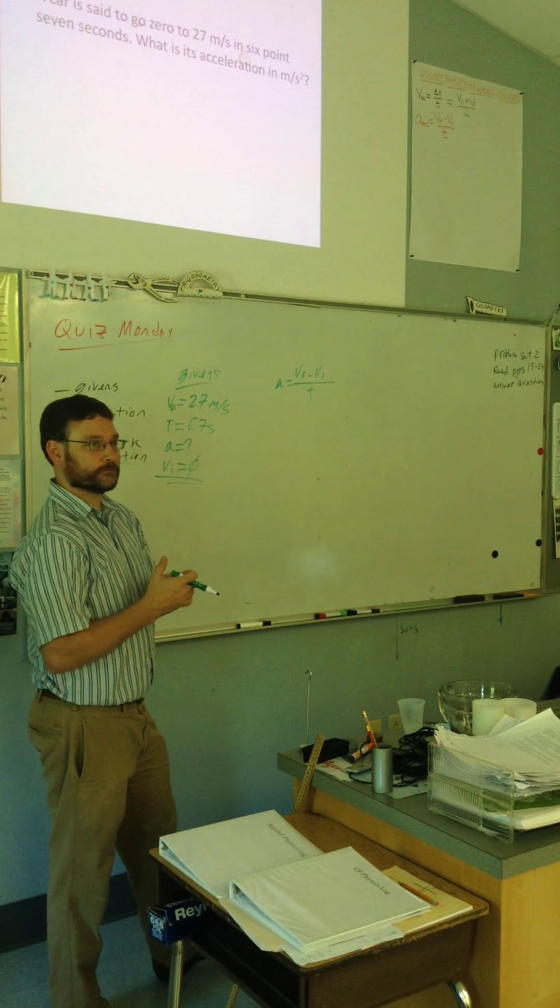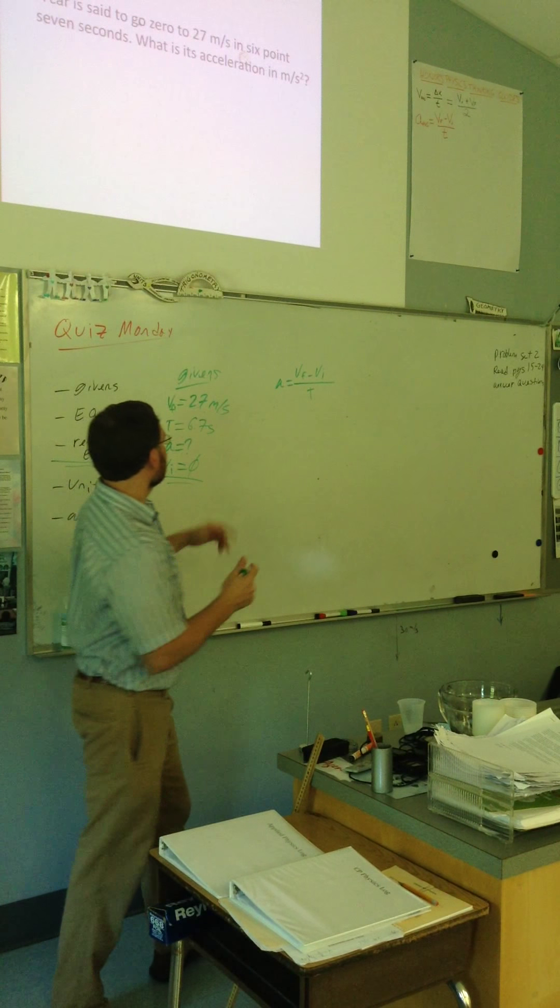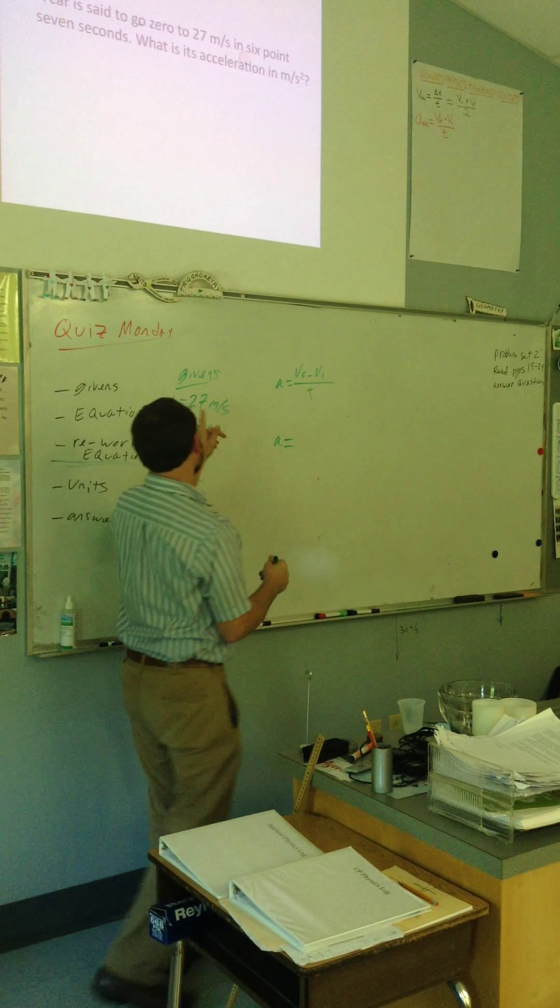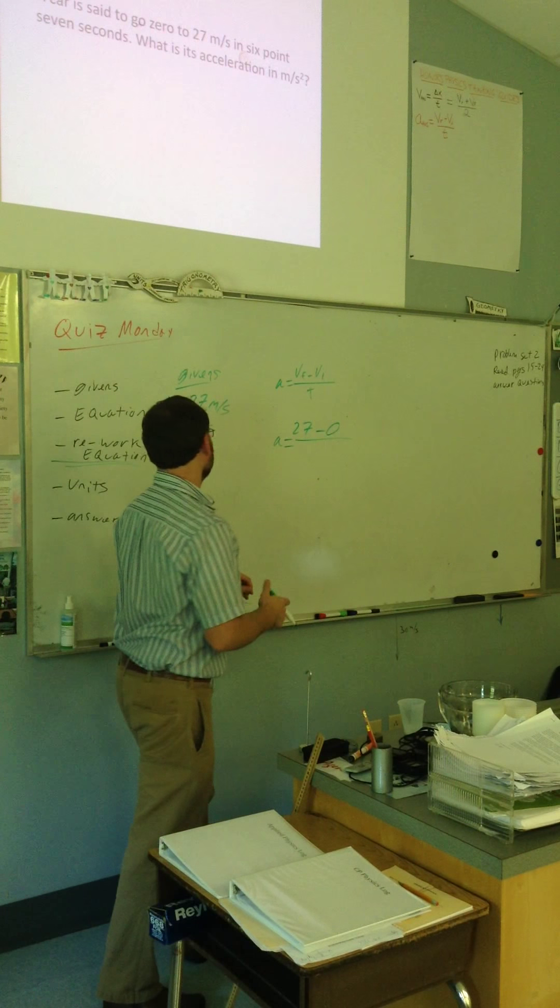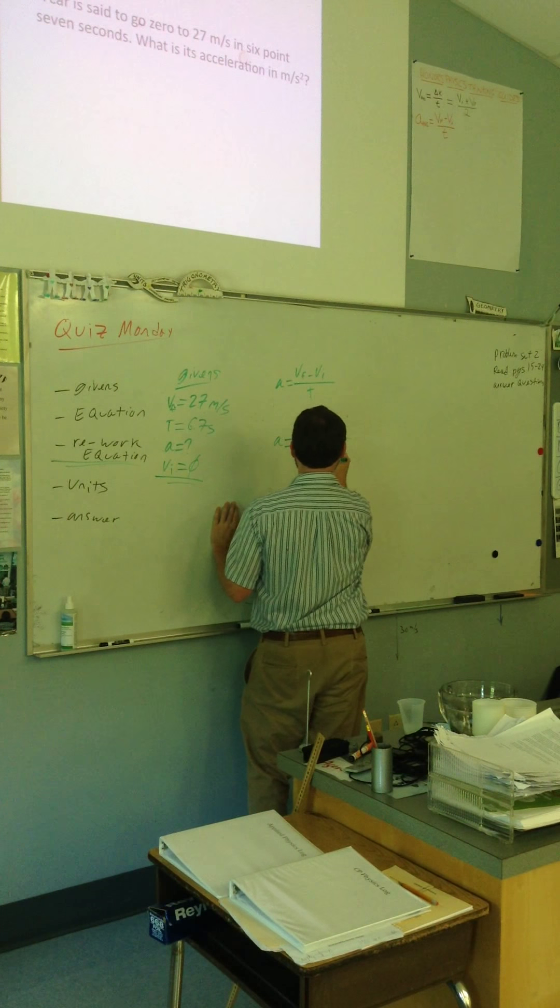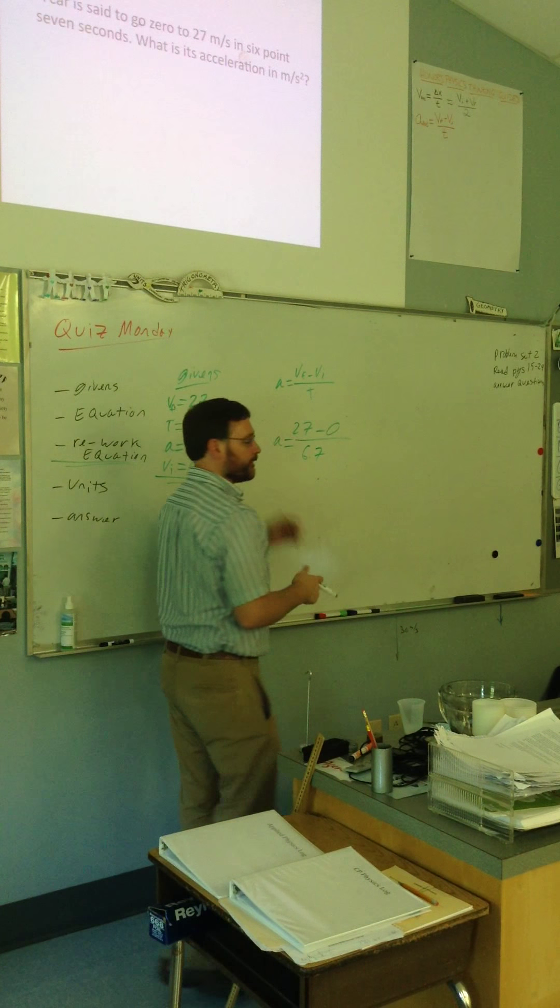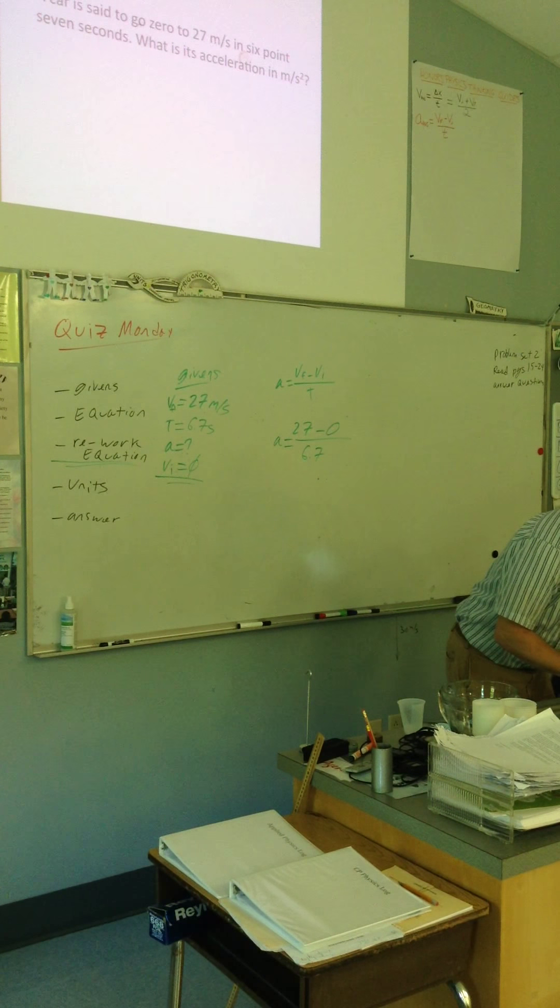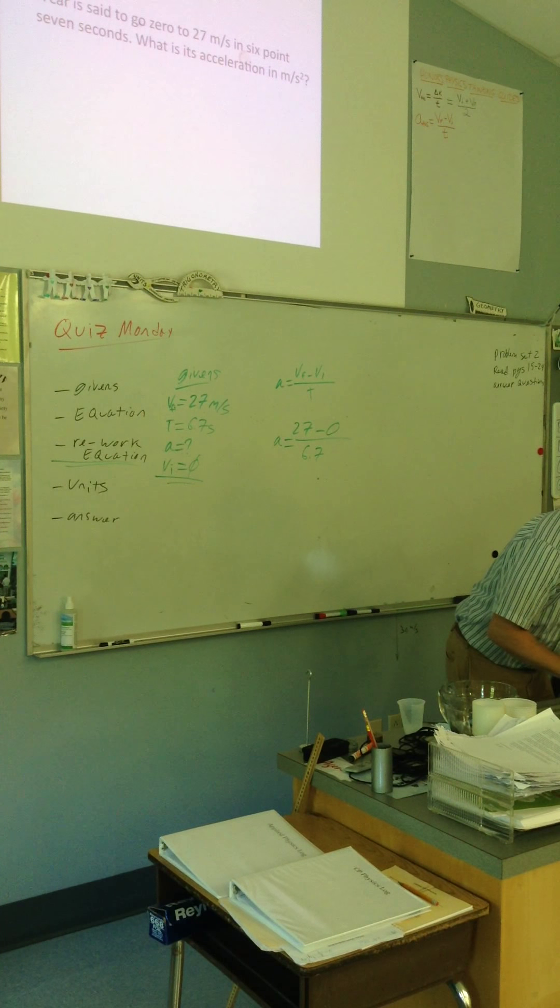Okay, so, what do I do next? What's the next step here? You plug numbers in, right? So, acceleration is my final velocity first. So, 27 minus zero over 6.7. What's 27 minus zero? 27. So, all I really have, then, is 27 divided by 6.7.